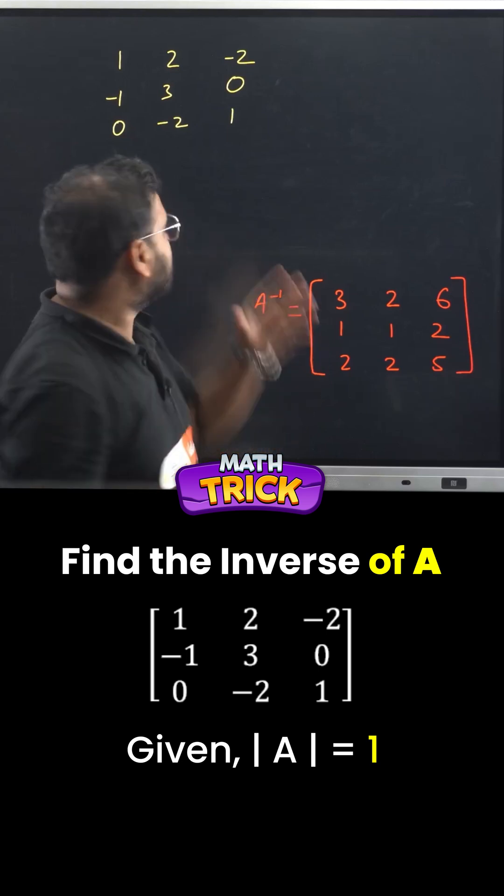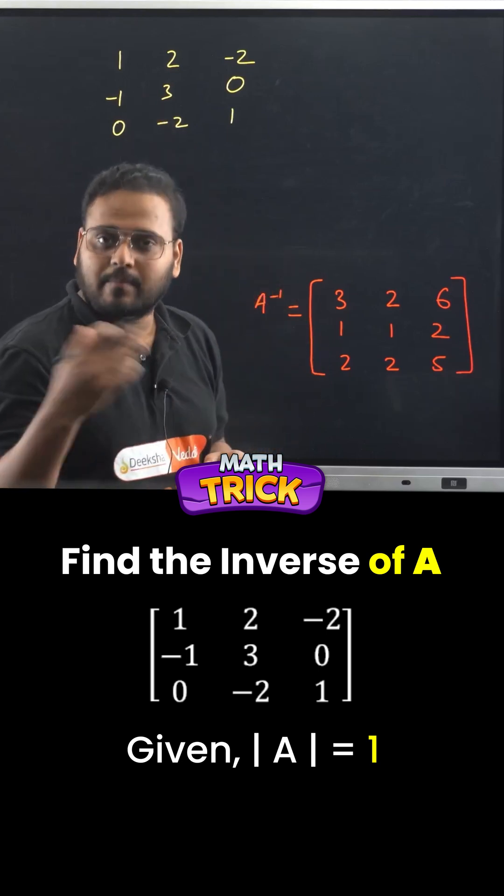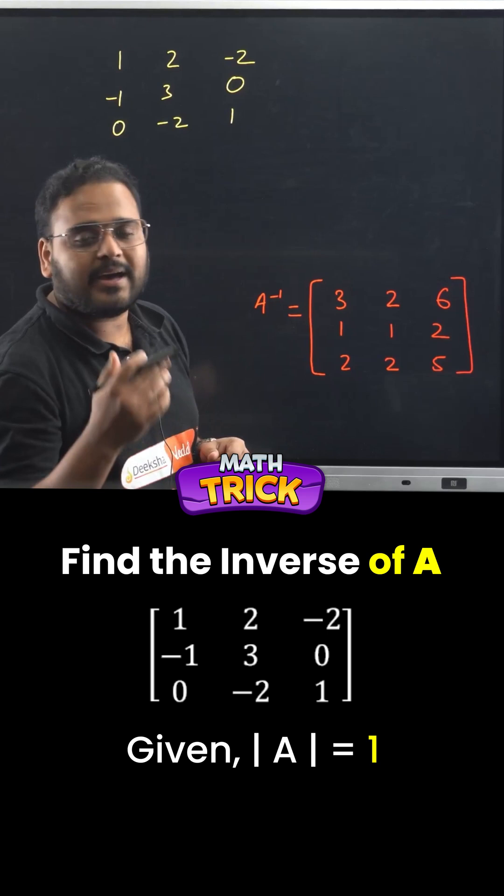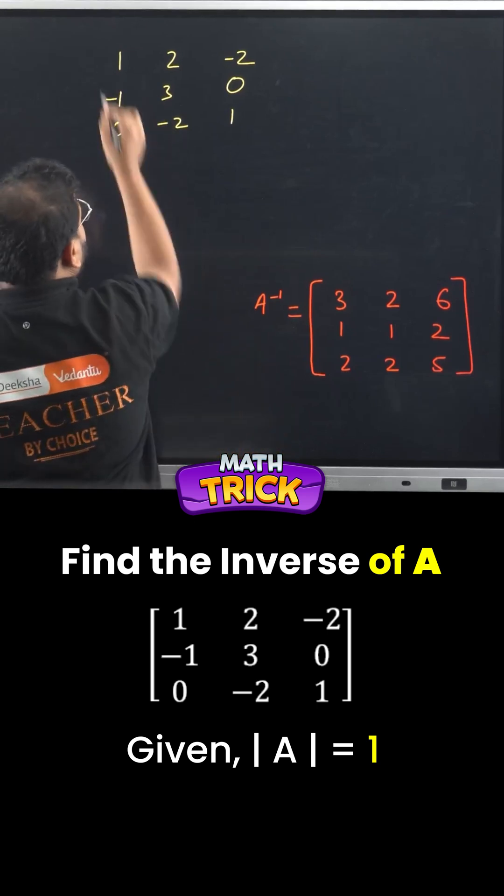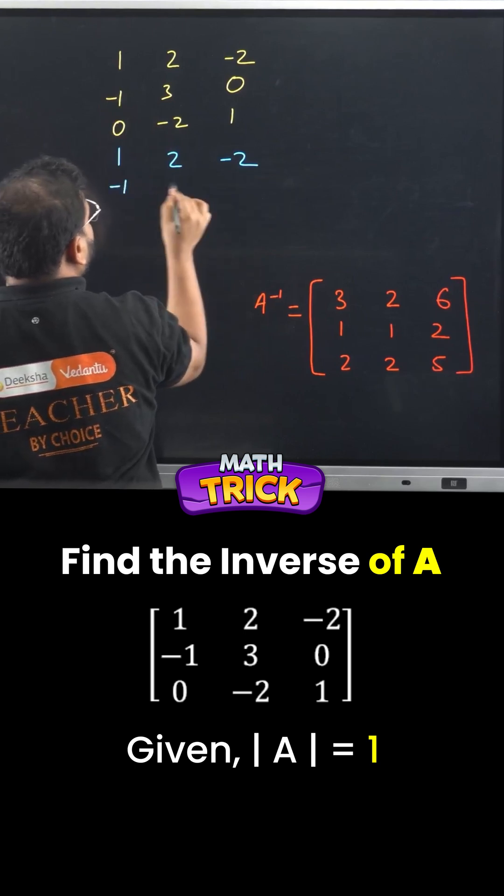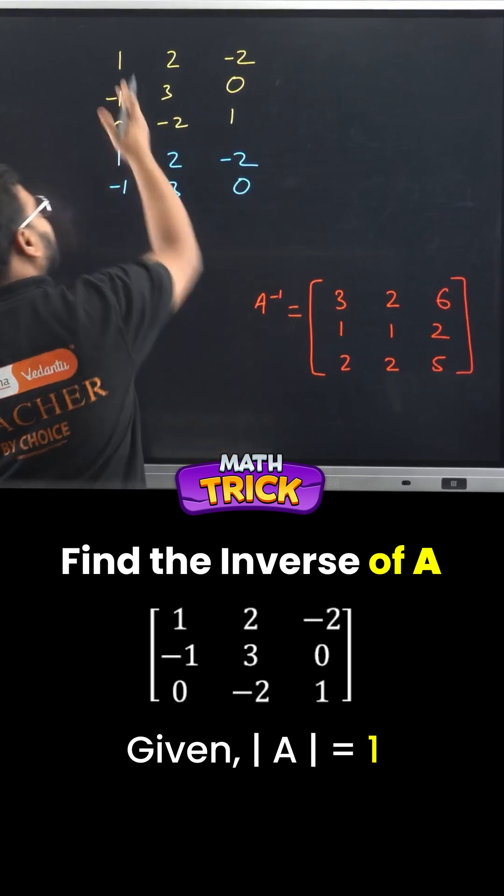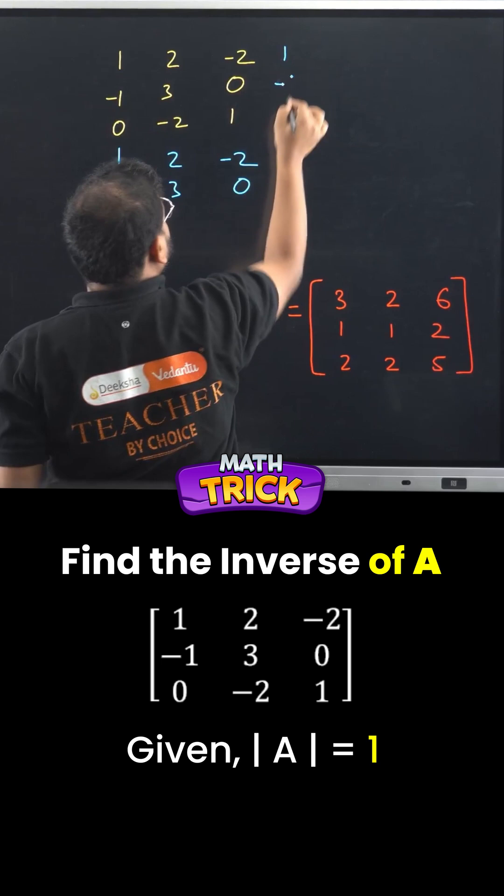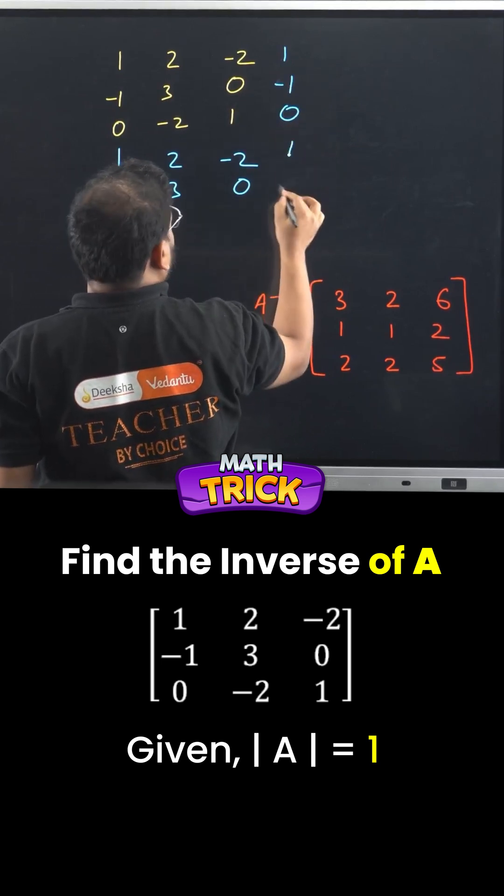The matrix given to us in the question is this one, 3x3, we'll make it by writing the row and column again in the order 5x5. Write the first row, we have 1, 2, minus 2, second row we have minus 1, 3, and 0. Again, first column we get 1, minus 1, 0, 1, and minus 1.